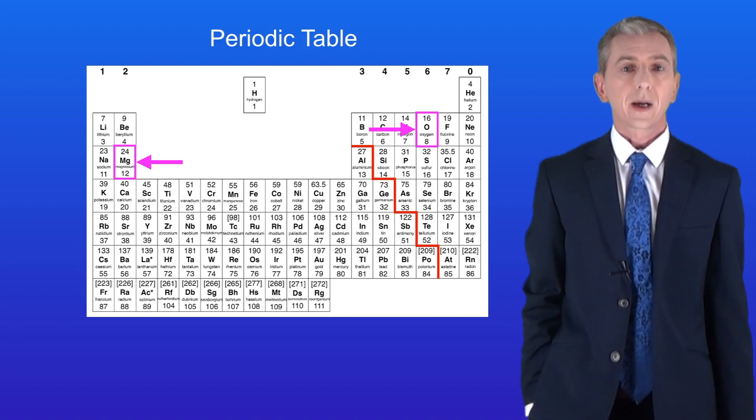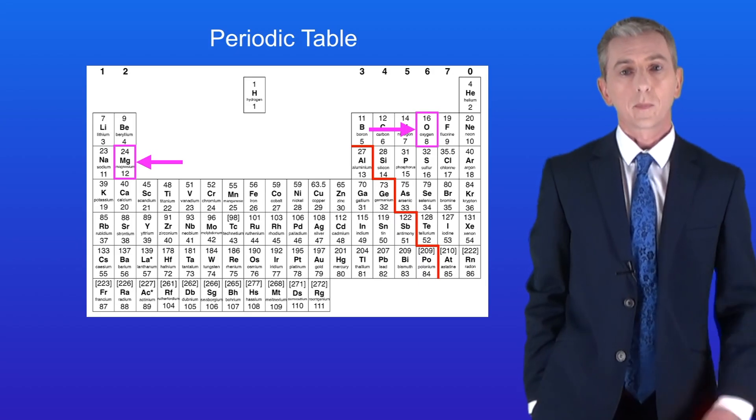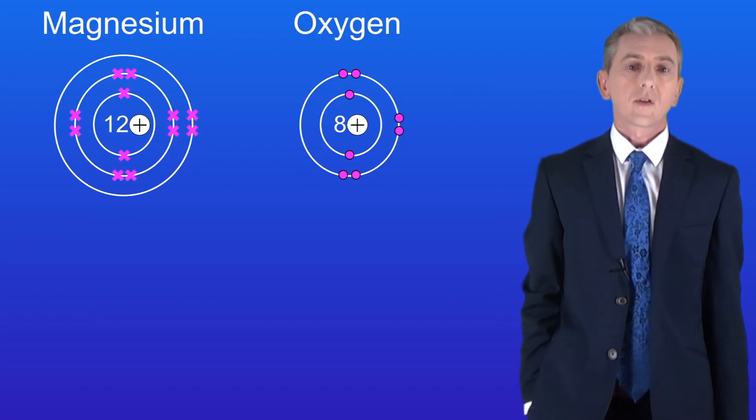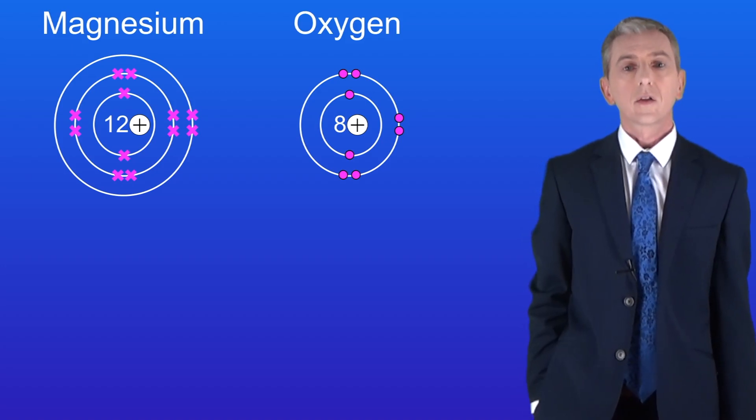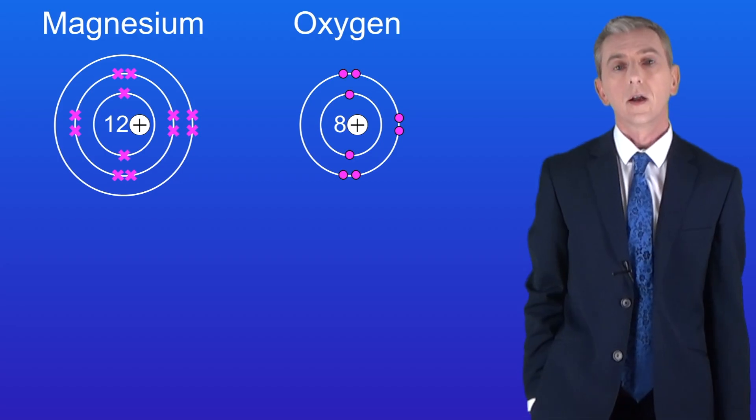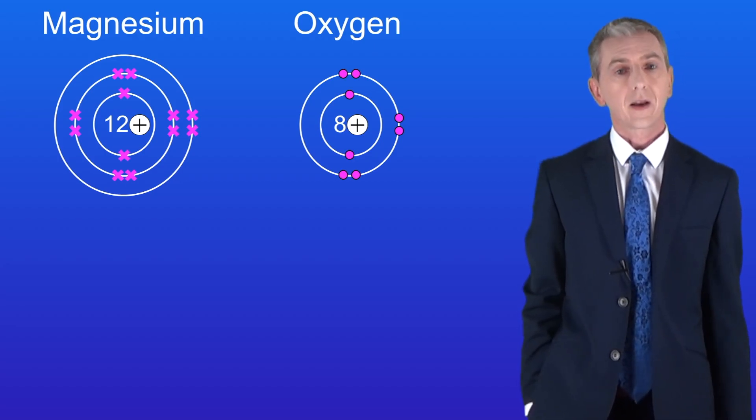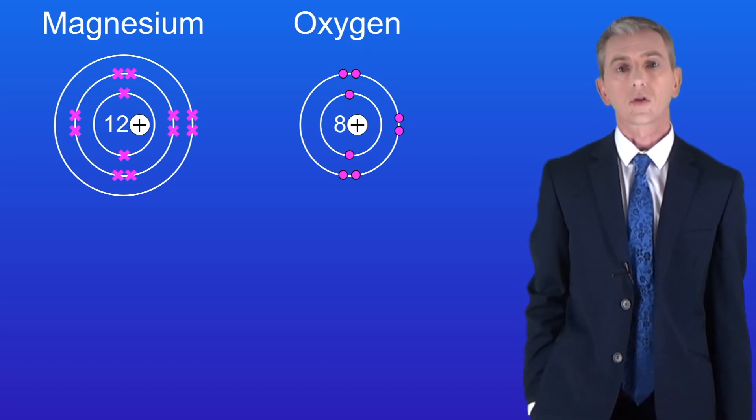I'm showing you a magnesium atom and an oxygen atom here. We can see that the magnesium atom has got 12 protons and 12 electrons so this atom's got no overall charge. The oxygen atom's got 8 protons and 8 electrons so again this atom has no overall charge.